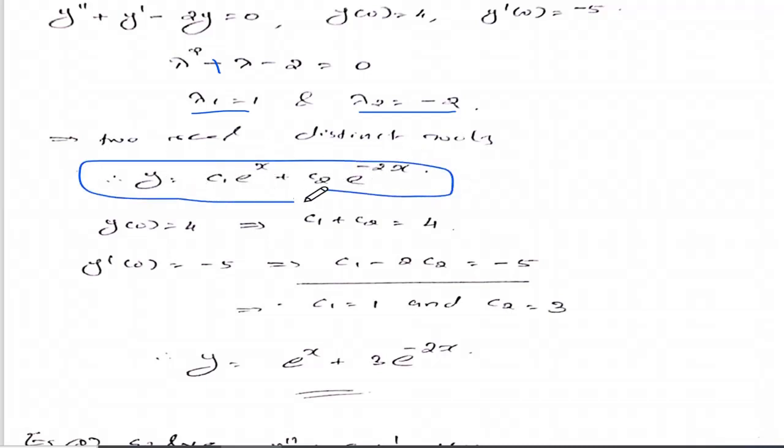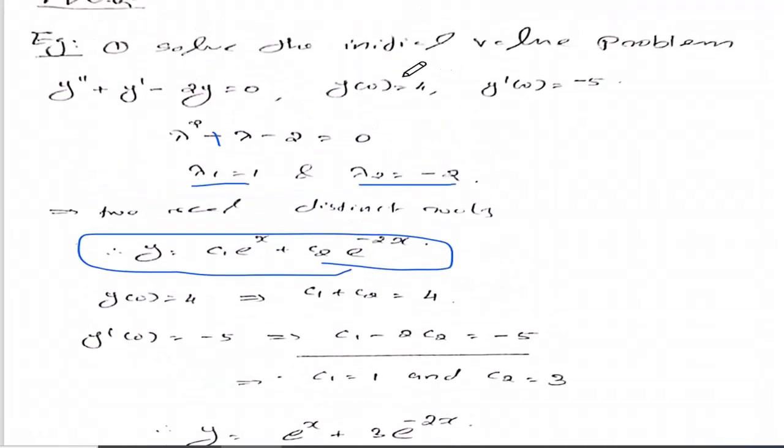Now applying the initial conditions to find the particular solution. For y of 0 equal to 4, substituting x equals 0 gives c1 e raised to 0, that is 1, plus c2 e raised to 0, that is 1. Therefore c1 plus c2 equal to 4.